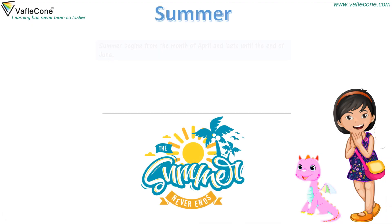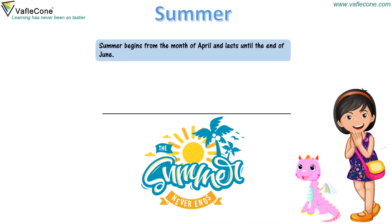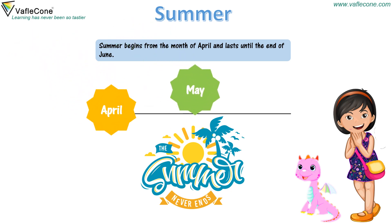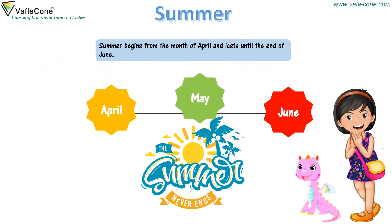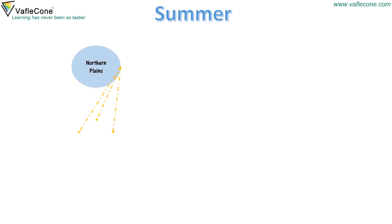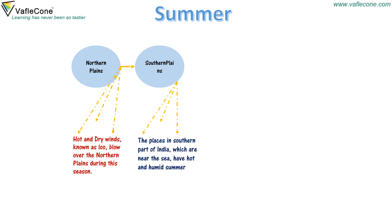Summer begins from the month of April and lasts until the end of June. Hot and dry winds known as loo blow over the northern plains during this season. The places in the southern part of India which are near the sea have hot and humid summer.